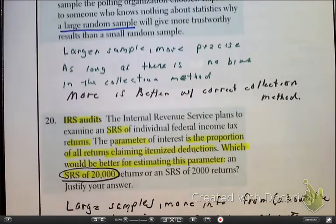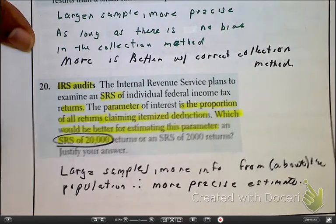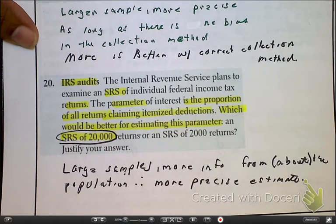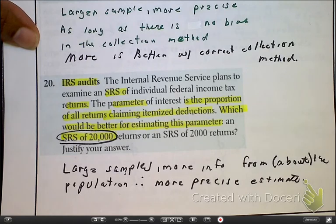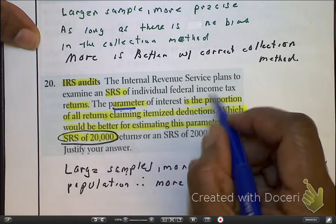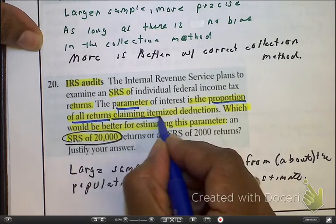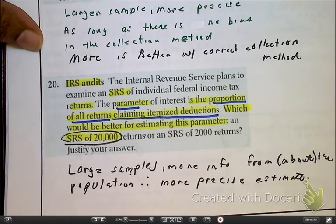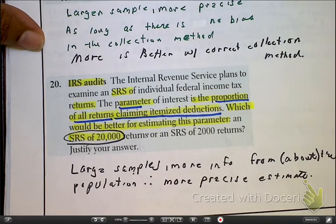Now, the last one, problem number 20. Pause and read. Okay, so as we're looking at this, it's talking about, again, we have a parameter for the population of all returning the claims that are going to, returns that are itemized deductions. So, is that how they determine the audit people? Interesting.